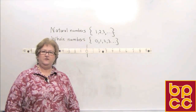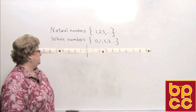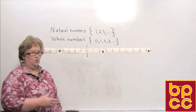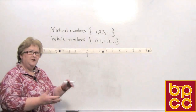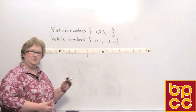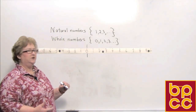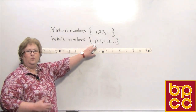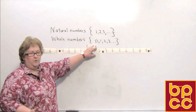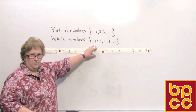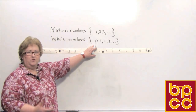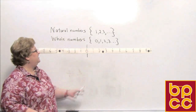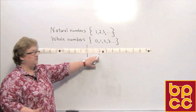Let's begin with natural numbers. Natural numbers are nothing but counting numbers: one, two, three, four. The difference between natural numbers and whole numbers is that whole numbers begin with zero. Normally when we start counting, we don't count with zero — we start with one, which would be the natural numbers.